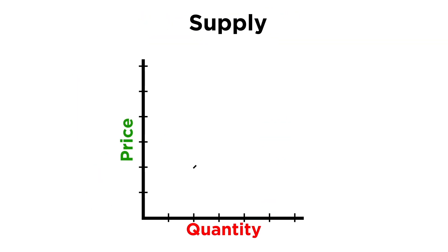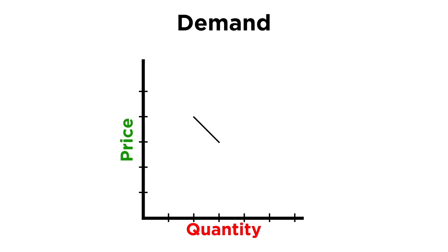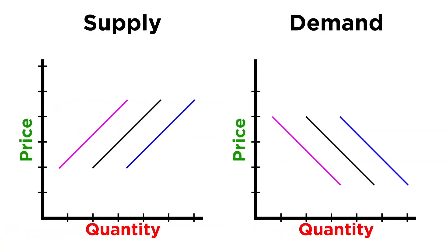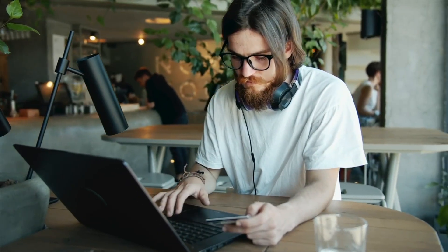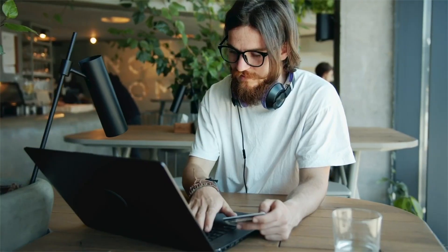On a graph, whenever supply increases, the supply curve shifts to the right. Whenever it decreases, the supply curve shifts to the left. The same goes for the demand curve — whenever demand increases, the demand curve shifts to the right, and whenever it decreases, the demand curve shifts to the left. All of these changes in supply and demand result in changing prices, and as consumers, we are always interested in how much things cost. So let's move forward and get a closer look at prices.